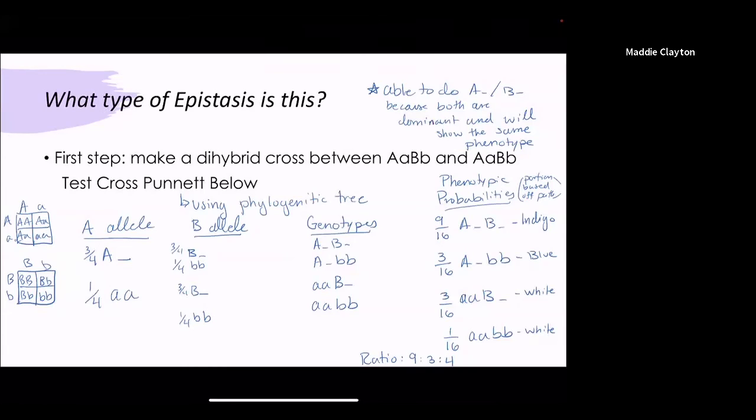The recessive A on both, double homozygous recessive, will only lead to white because you no longer have a dominant A to even take you to the blue. So your ratio becomes 9:3:4.